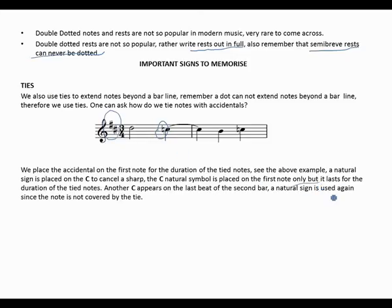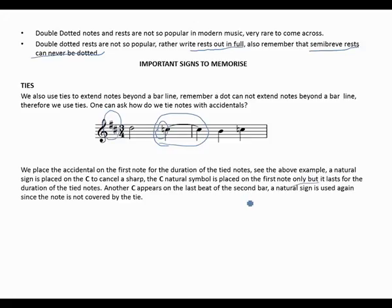The natural sign lasts for the duration of the tied note — it lasts for both tied notes together. When you play this natural, the following tied note automatically becomes a natural because of the tie. If another C appears outside the tied notes, a natural sign must be used again, since that note is not covered by the tie — otherwise the C sharp would still be applicable.